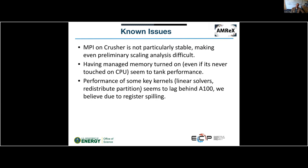Some known issues on Crusher: MPI is not particularly stable, especially after updates, which makes scaling analyses difficult. Having managed memory enabled — even if data is never touched on the CPU — severely degrades performance, so we simply never allocate managed memory on Crusher. Performance of key kernels like linear solvers and the redistribute partition lags behind A100, which we believe is due to increased register spilling in the HIP compiler.